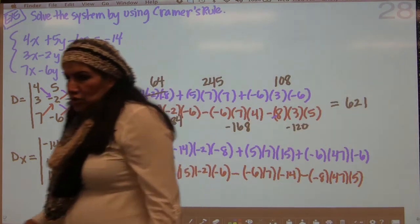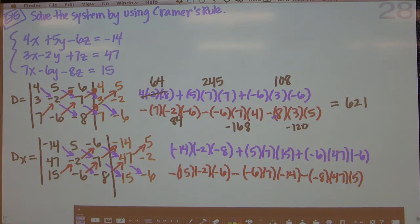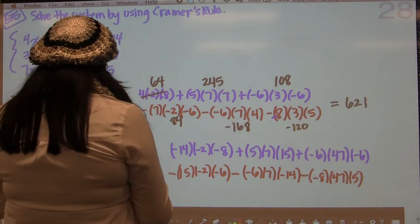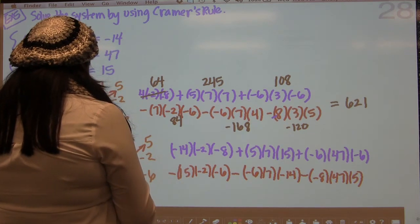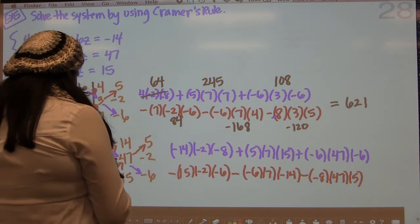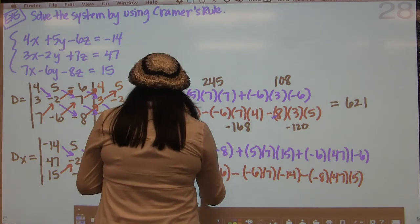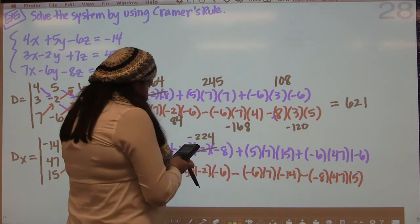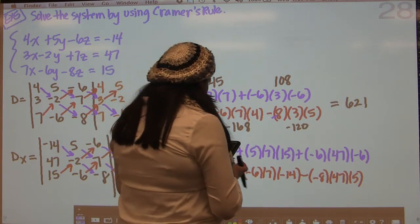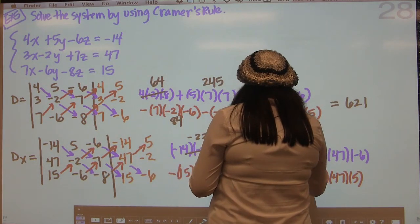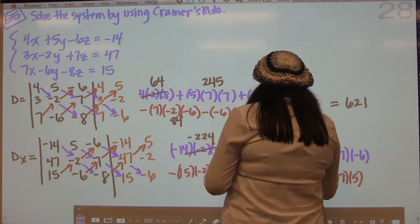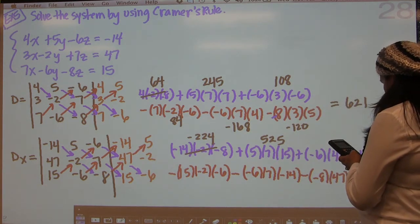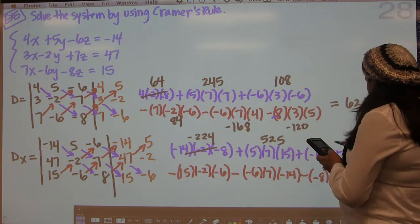So now we're going to multiply to get these values. Negative 14 times negative 2 times negative 8 gives us negative 224. 5 times 7 times 15 is 525. And then negative 6 times 47 times negative 6 is 1692.